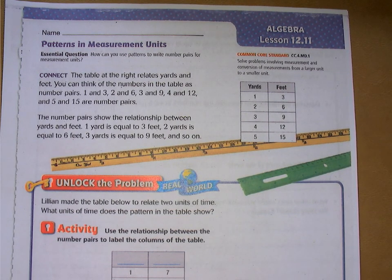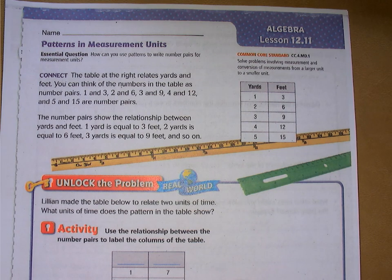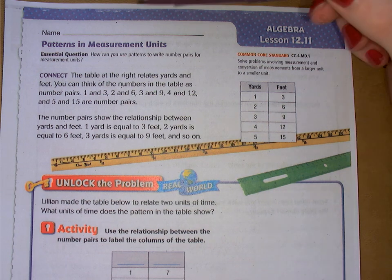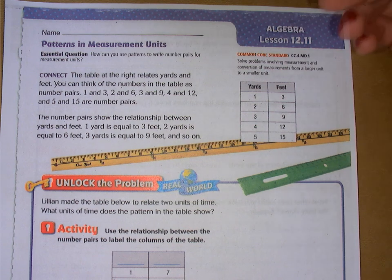Hi guys, today we're doing 12.11. This is Mrs. May and it's patterns and measurement units. This won't be too hard because these are the same kind of t-charts we've been doing all along in the chapters. We're just trying to figure out what the mystery t-chart is. They'll have stuff listed for us and we need to figure out what they did. The table at the right relates yards and feet.